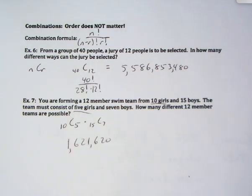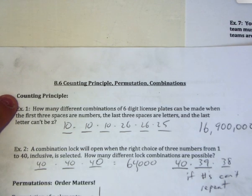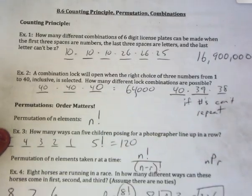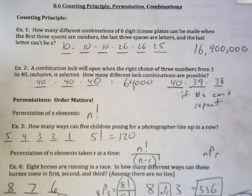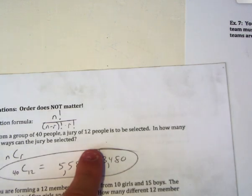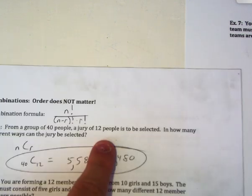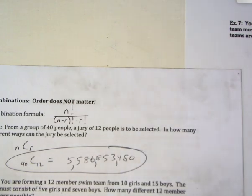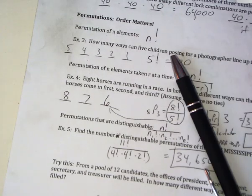As you practice, just think: am I filling in spaces like a counting principle problem? Am I ordering things like first, second, and third? Or am I selecting a subgroup from a large group? That's how you have to approach these problems. Let me know if you have any questions. Best of luck.